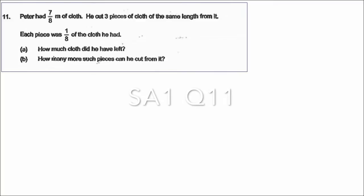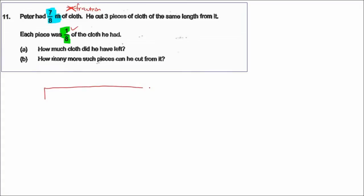Hopefully by now you should be able to distinguish between a fraction and a non-fraction. So over here, 7 over 8 meter — this is not a fraction. But 1 over 8 is a fraction. So let's take this step by step. The whole thing is: what is 7 over 8? It's 7 over 8 meter of cloth, and we cut out three pieces of the same length.